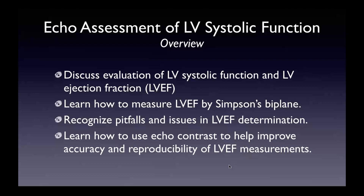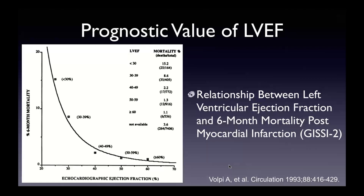We all recognize the prognostic value of LV EF. It's not a perfect measure of LV systolic function, but it's the one studied the most with the most prognostic information. This is data from an early thrombolytic trial for ST-segment elevation myocardial infarction — the GC2 study — where as LV ejection fraction falls along the x-axis, six-month mortality post-STEMI increases exponentially.